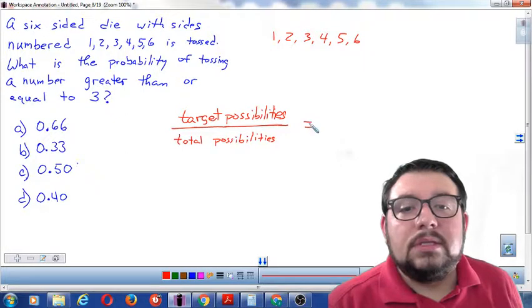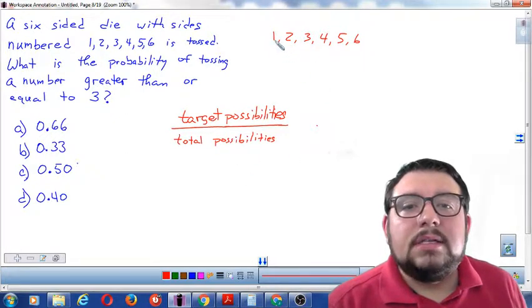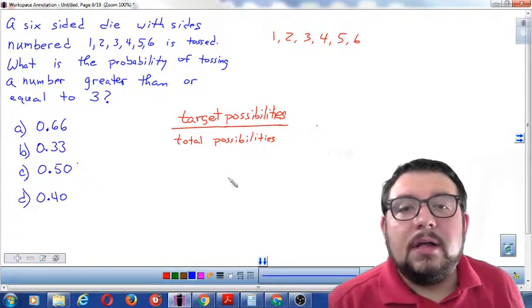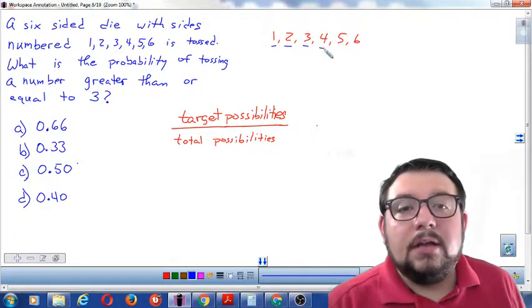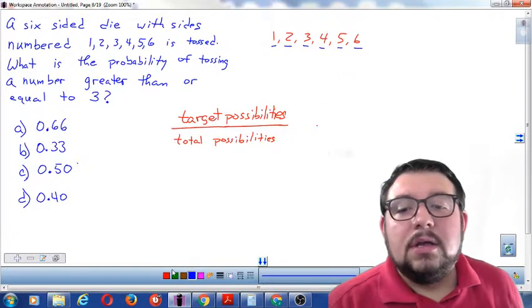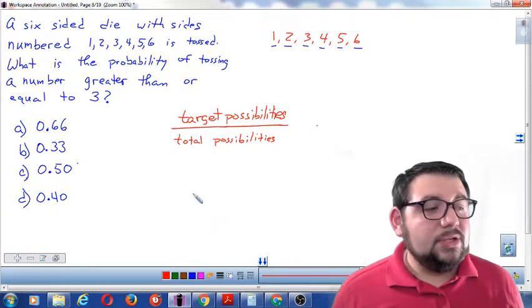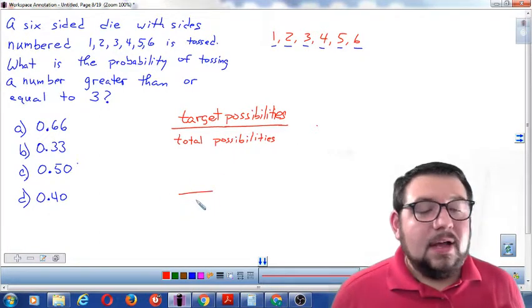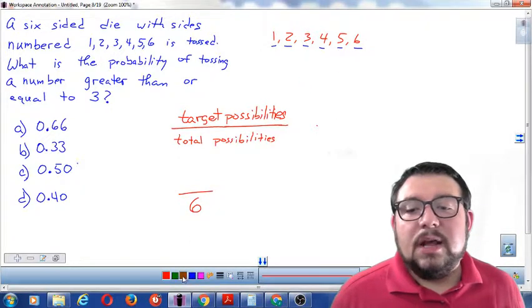Okay, so what I'm going to do is substitute. How many possibilities are there? Well, I roll the dice. I could get a 1, I could get a 2, I could get a 3, I could get a 4, I could get a 5, or I could get a 6. So the total possibilities is going to be the bottom number of my fraction. Six total possibilities when I roll that dice.